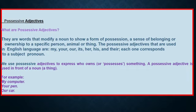The possessive adjectives used in the English language are: my, your, our, its, her, his, and their. Each one corresponds to a subject pronoun. For example: 'my computer' — here 'my' is the possessive adjective and it is used in front of the noun 'computer.' Other examples: 'your pen,' 'our car.' So 'my computer' means the computer is owned by me, 'your pen' means the pen is owned by you.